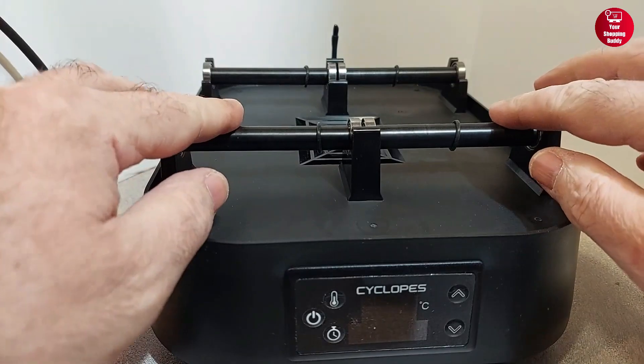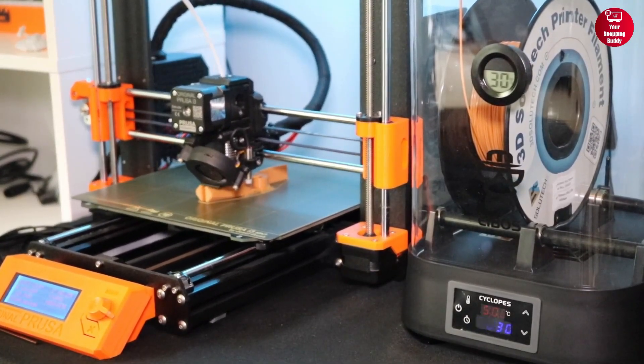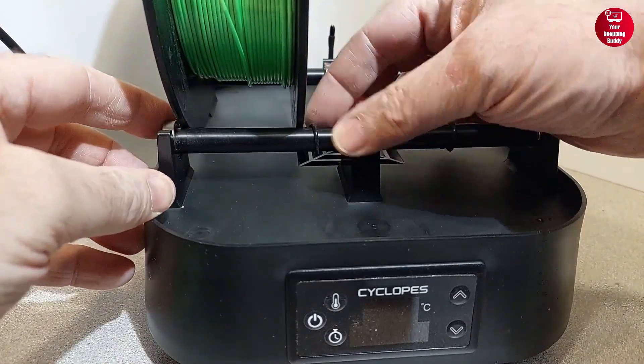Furthermore, its two built-in rotating shafts enable the filament to continuously rotate in a dry hotbox, removing moisture and revitalizing old spools.